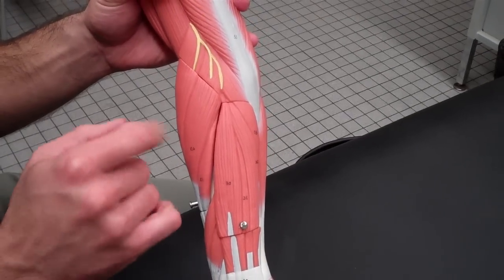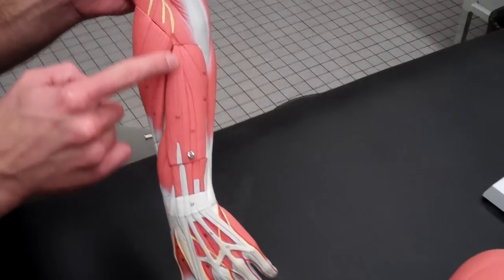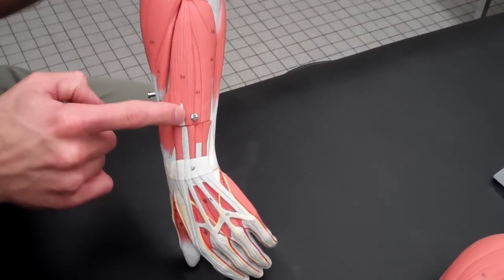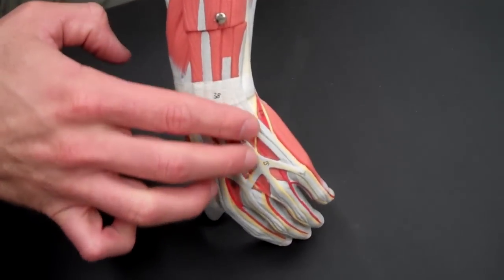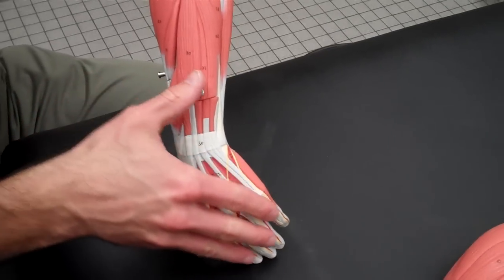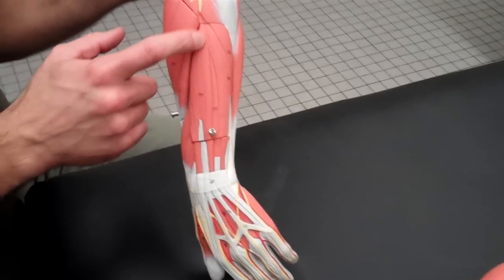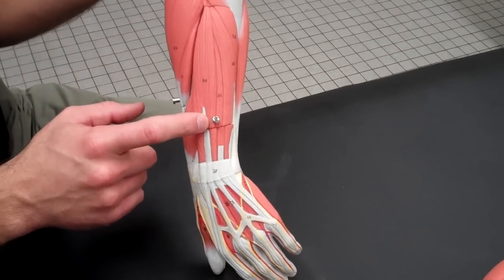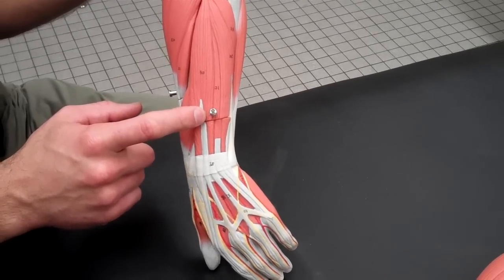If we continue to work medially, this one right here, number 30, it's a great tendon. You see it intersects here. It comes down and splits into four different tendons below. These four tendons enter all the way down into your fingers. So number 30 is your extensor digitorum longus.